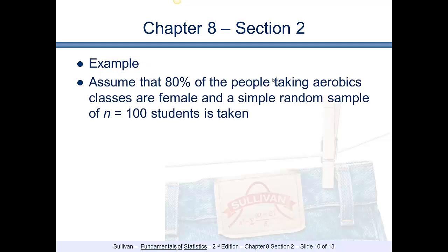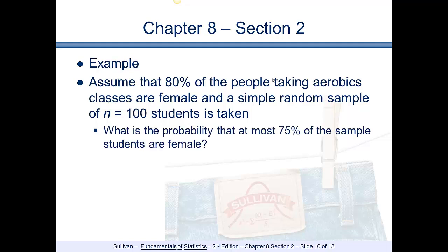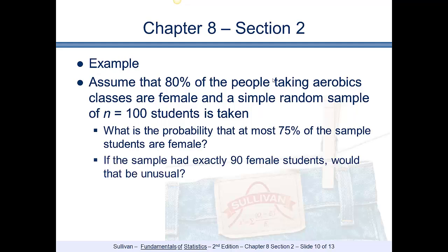Here's our problem. Assume that 80% of the people taking aerobics classes are female, and a simple random sample of 100 students is taken. What is the probability that at most 75% of the sample are female? And if the sample has exactly 90 female students, would that be unusual? We have two different situations to deal with.